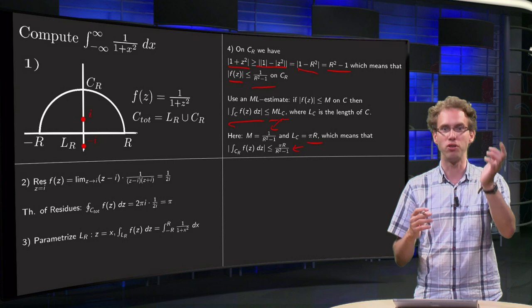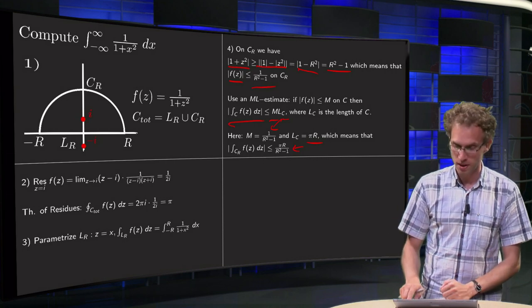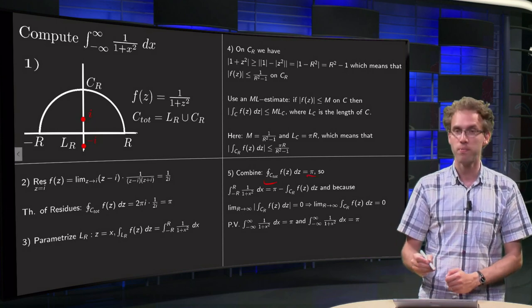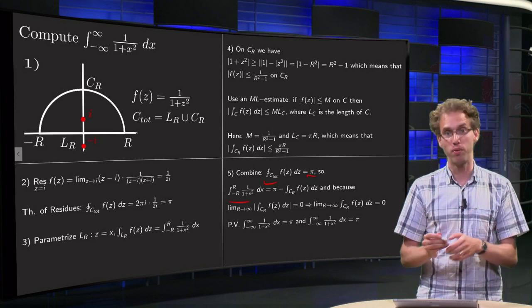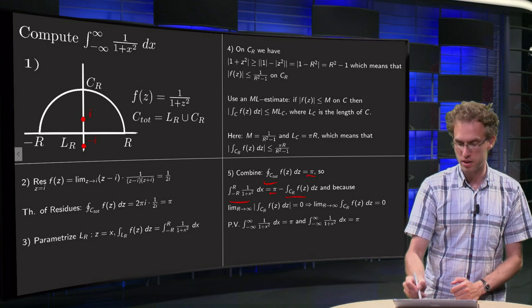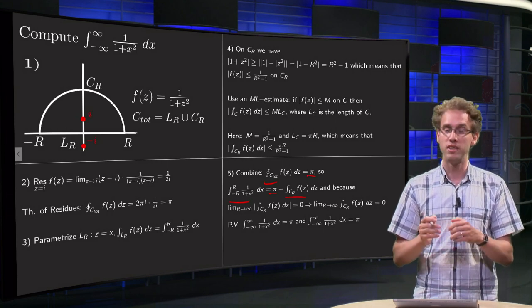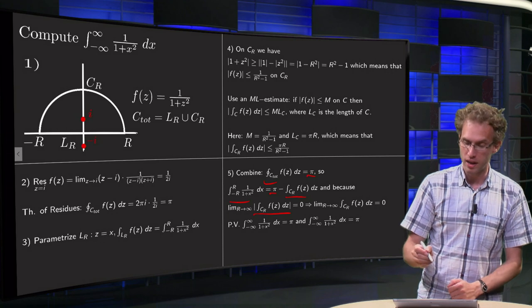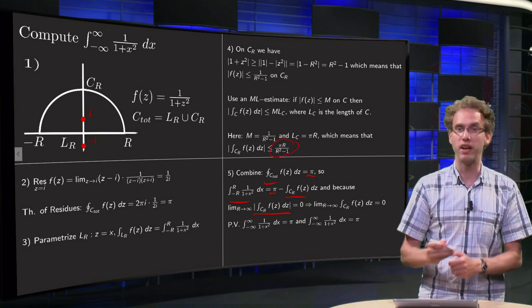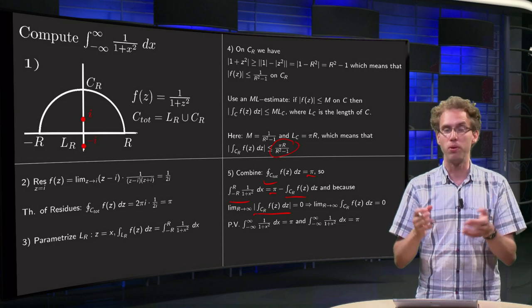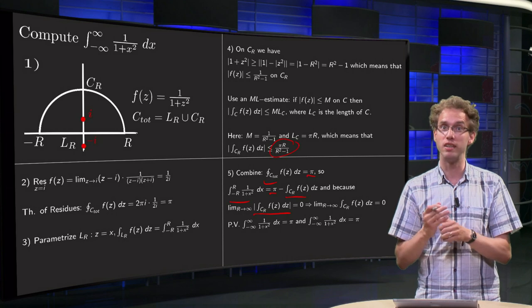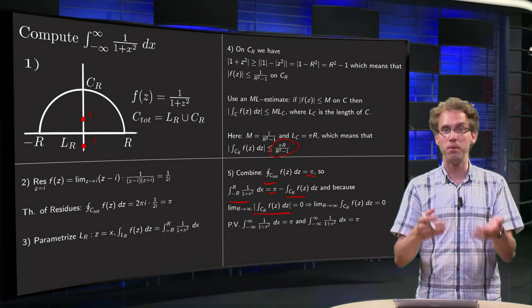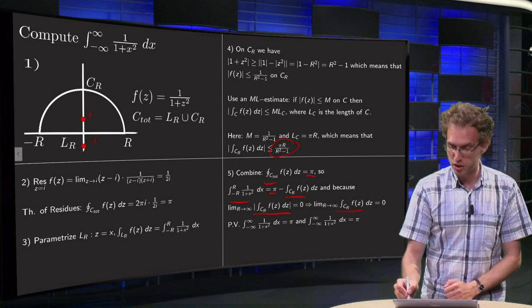So final step: combine everything. We know the integral along C_total equals π, so the integral from minus R to R of 1 over 1 plus x squared equals π minus the integral C_R f(z) dz. Now, the limit from R to infinity of the absolute value equals zero, because if you take the limit over here, you can for example use L'Hôpital's rule or divide by R squared in order to show that this limit equals zero. So the limit of the absolute value, the limit of the norm of the integral equals zero, and if the limit of the norm equals zero, then the limit of the integral itself equals zero.